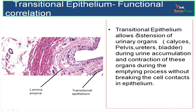The transitional epithelium allows distension of these urinary organs during urine accumulation and contraction of these organs during the emptying process without breaking the cell contacts in the epithelium. That is the most important feature of transitional epithelium.